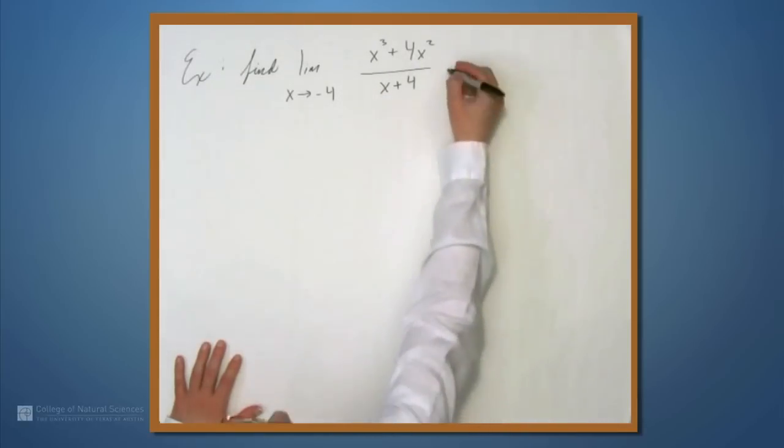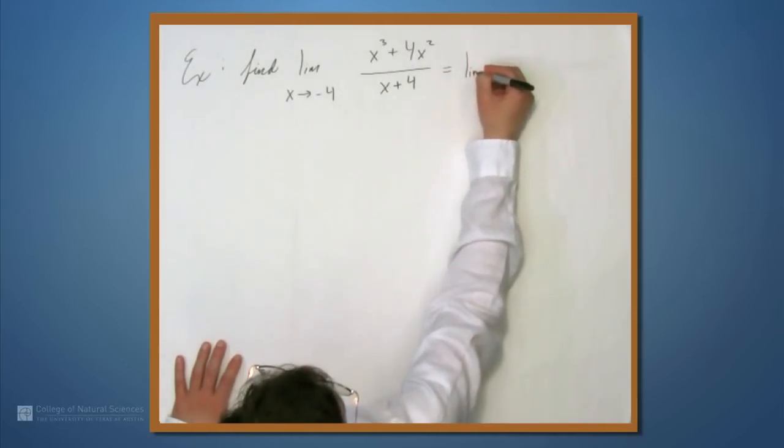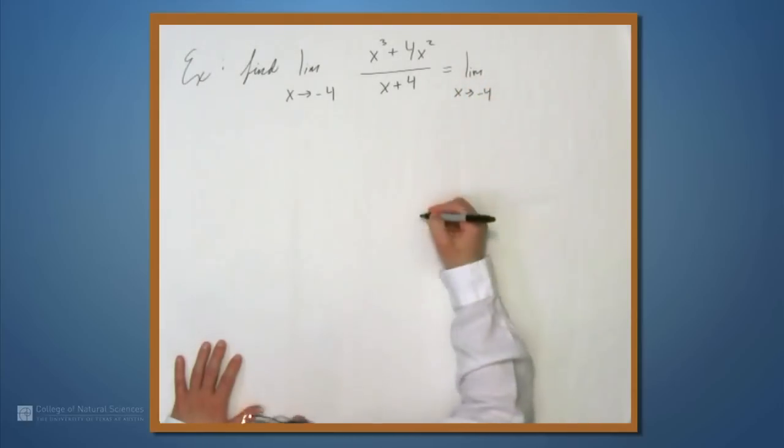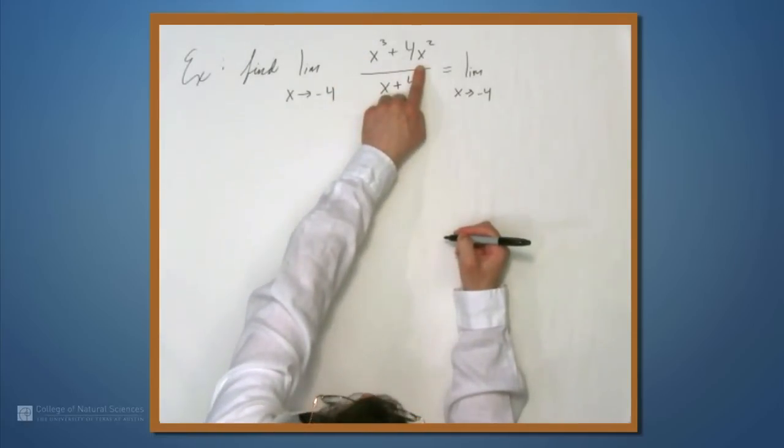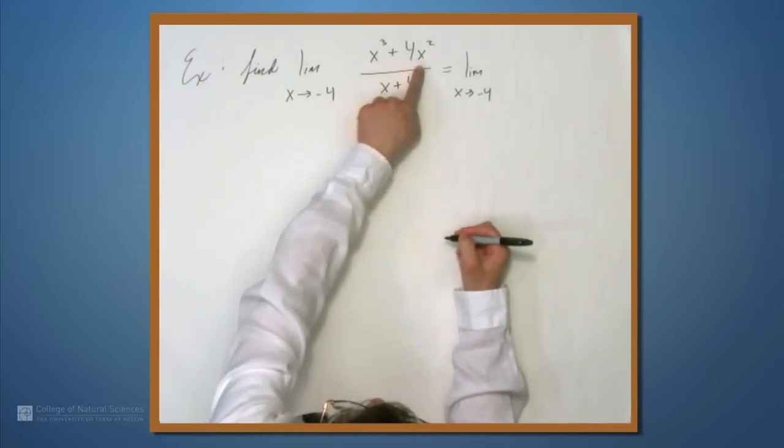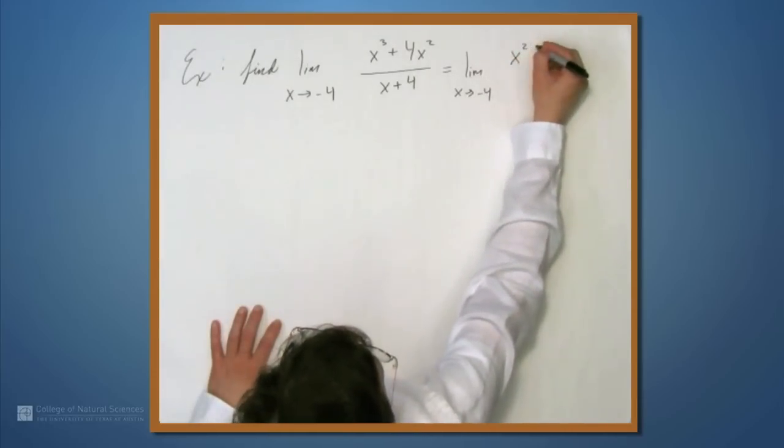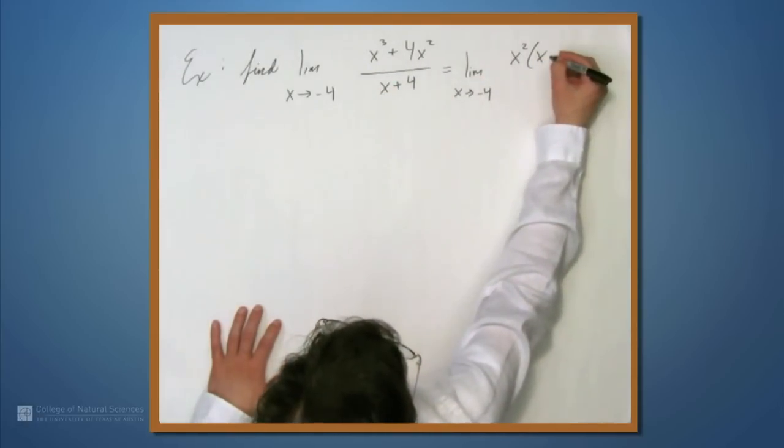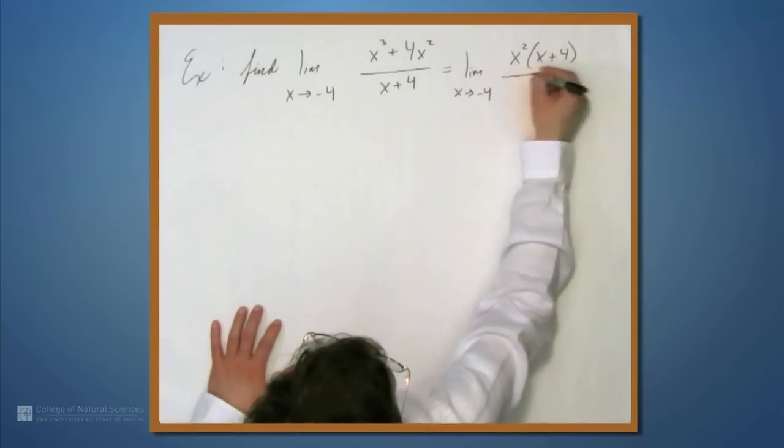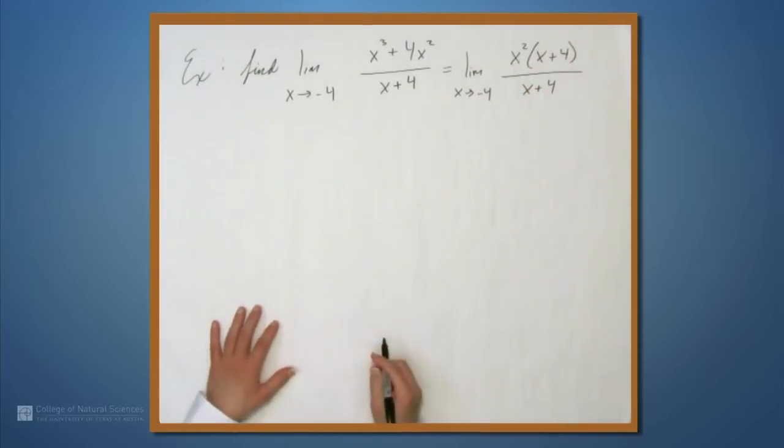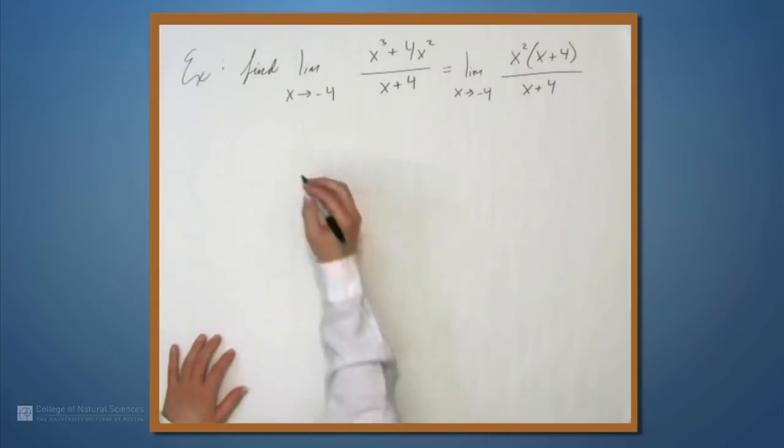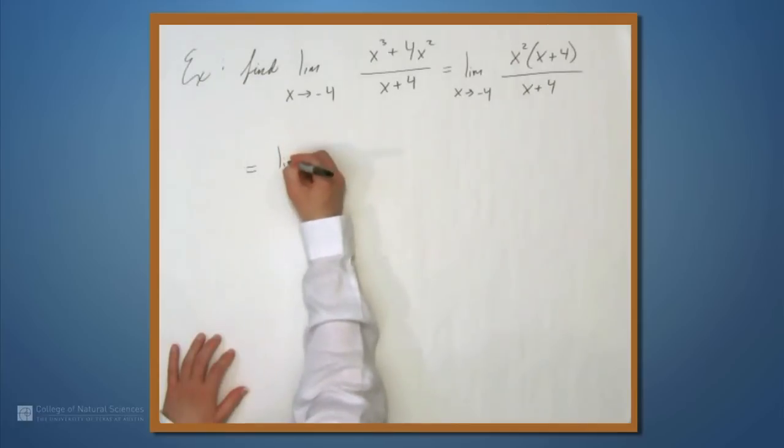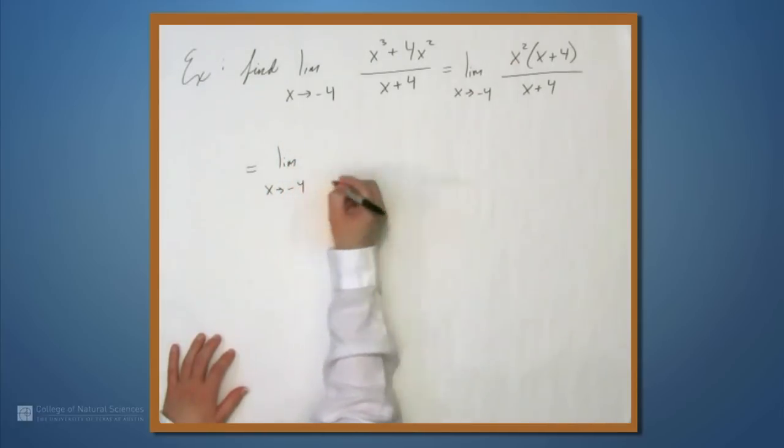So this is equal to the limit as x approaches negative 4. We have an x³ here and an x² term here. We can factor an x² term out of both of these. So we get x² times, we're left with an x term here, we're left with a 4 here. So we have x² times the quantity x plus 4 all over x plus 4. The x plus 4s cancel out and we are left with the limit as x approaches negative 4 of x². And this is 16.